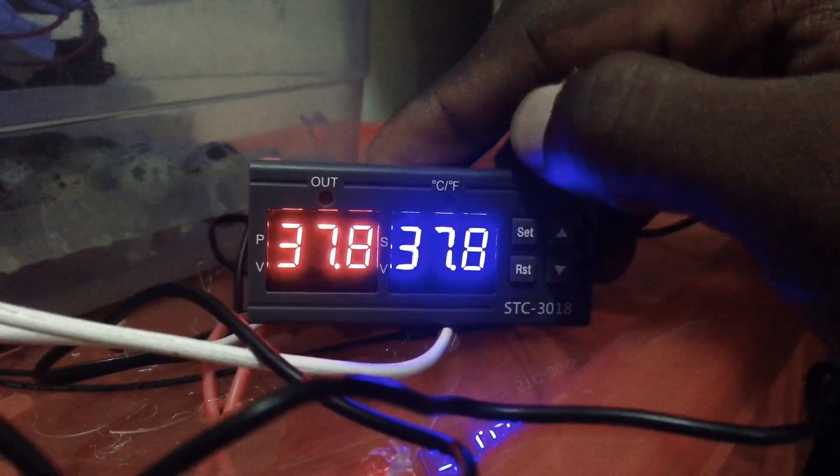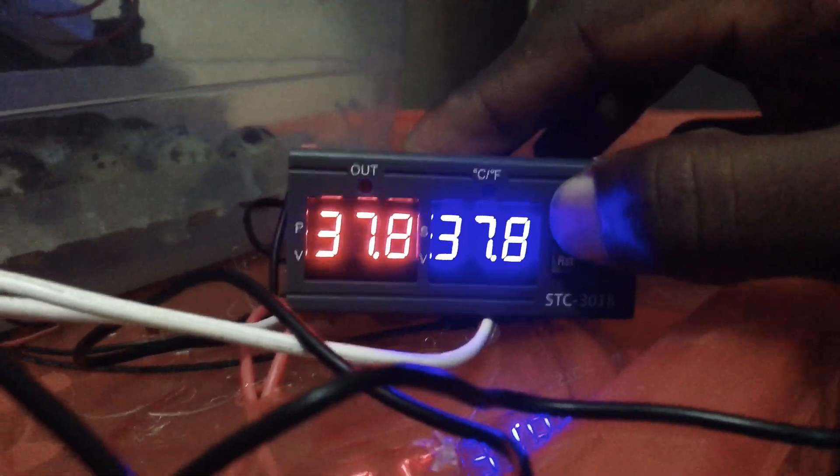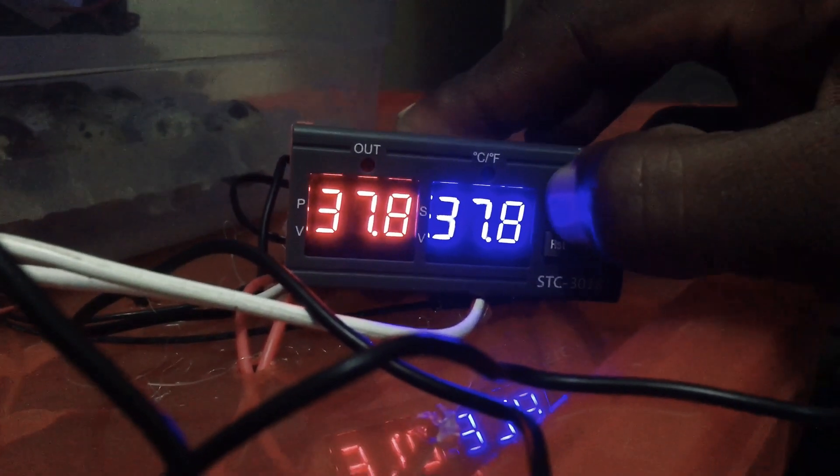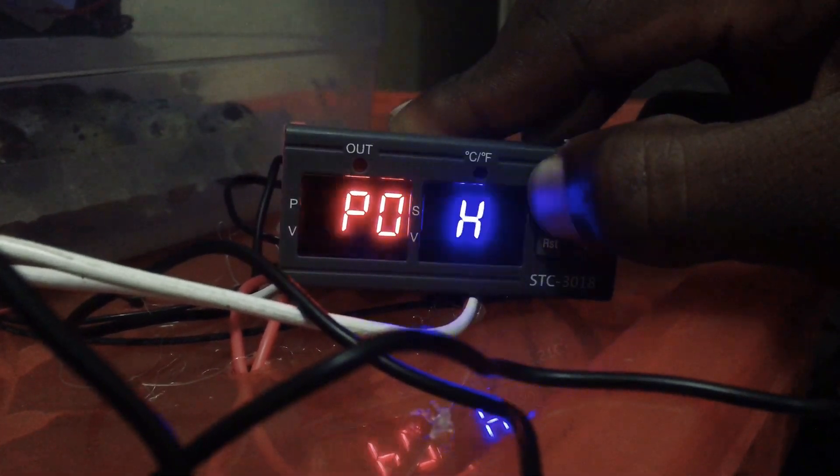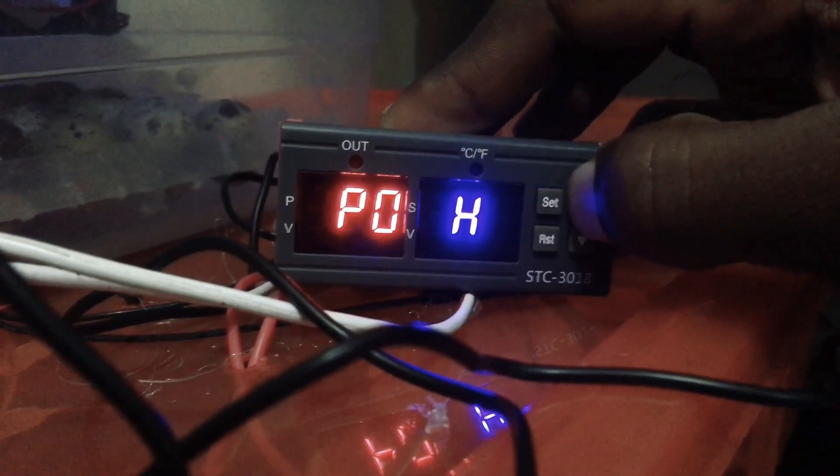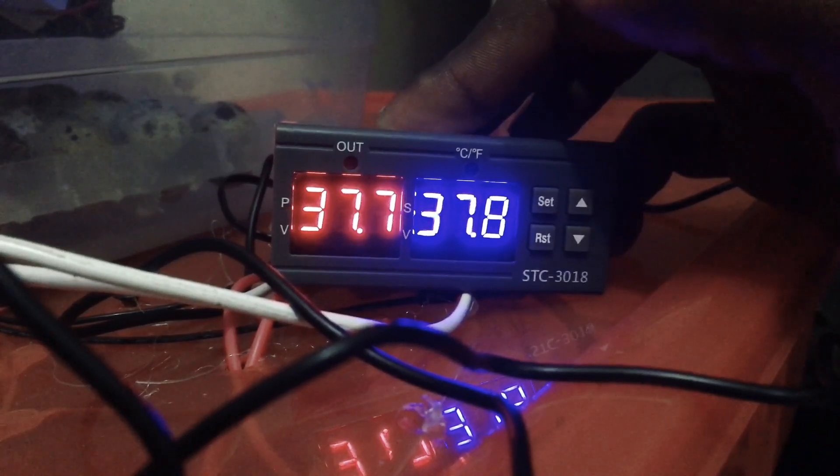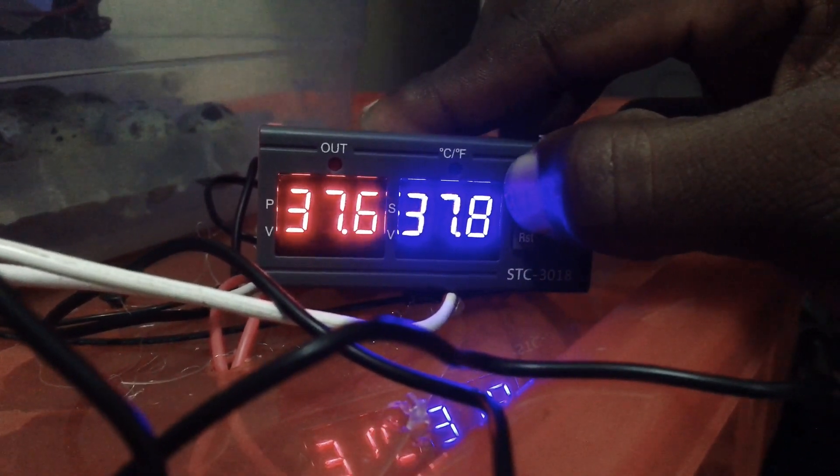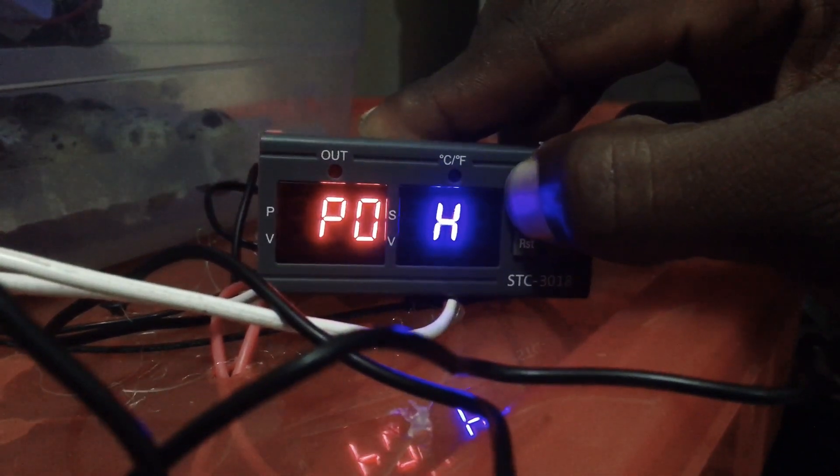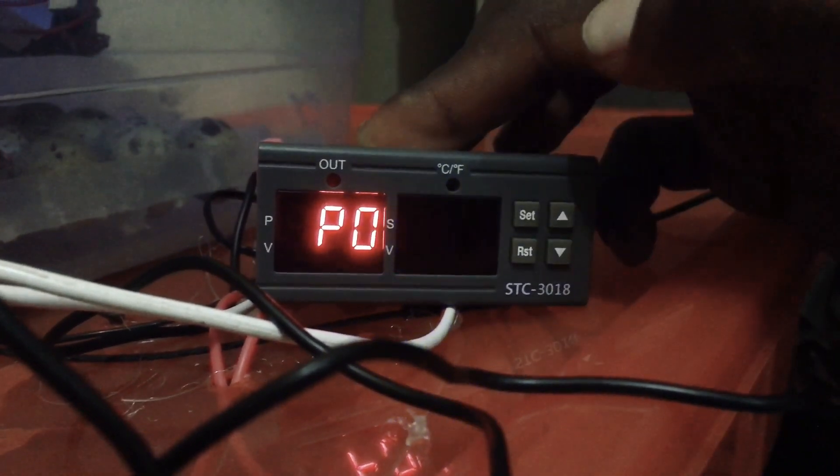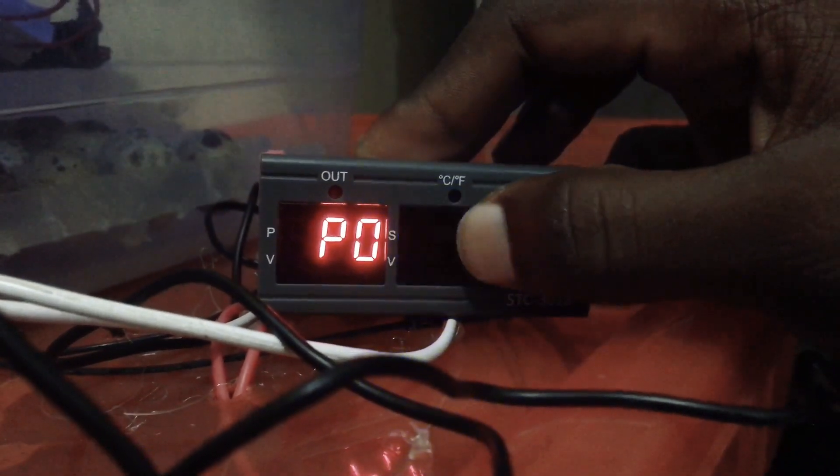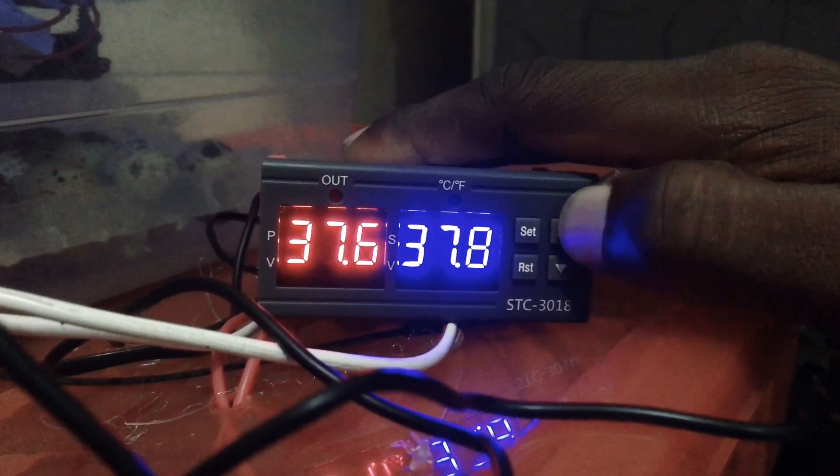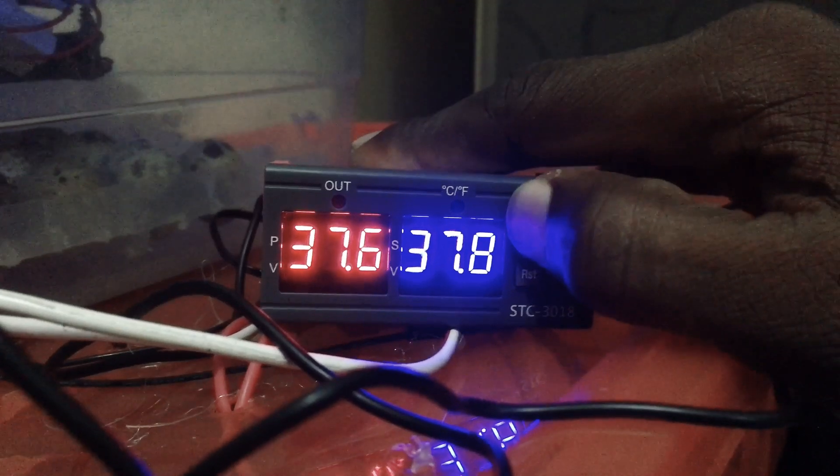Now we're going to set the other features. We're going to press it for a long time until you see P0. When the P0 disappears you can't set it anymore. I'm going to press the P0 again, press and hold and press the set again to see the blue side blinking. If you see the blue side blinking, that means you are ready to set it.